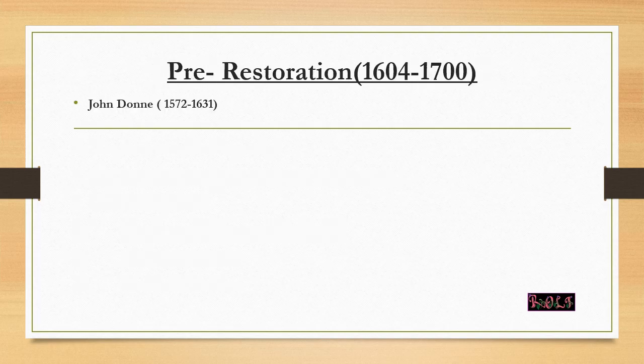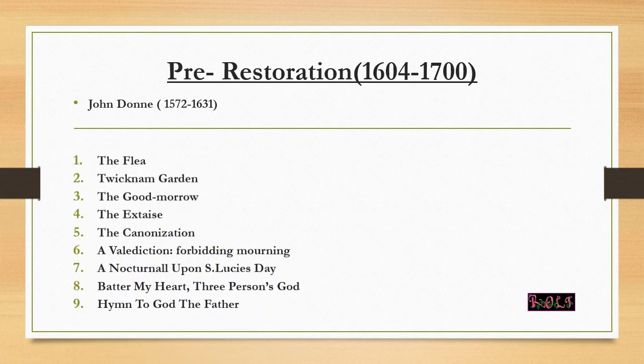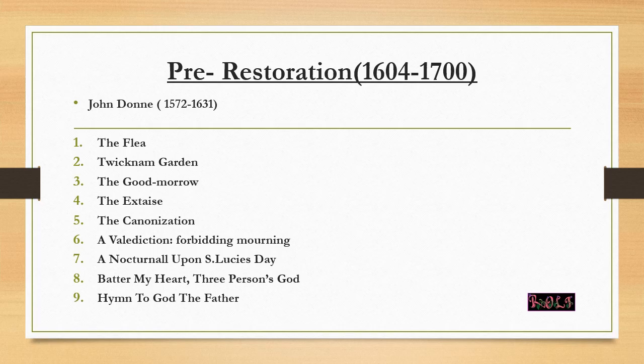After the Renaissance we have the pre-Restoration period, also known as the period of metaphysical poetry. The important poet of this era is John Donne. His important poems include: The Flea, Twickenham Garden, The Good Morrow, Ecstasy, Canonization, A Valediction: Forbidding Mourning, A Nocturnal upon St. Lucy's Day, Batter My Heart Three-Personed God, and Hymn to God the Father.